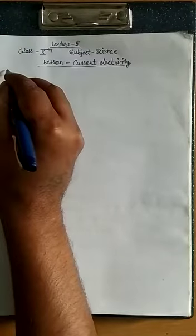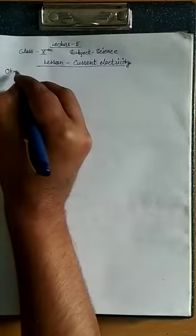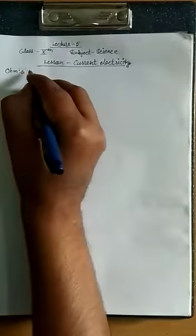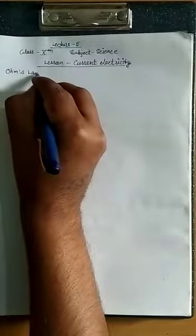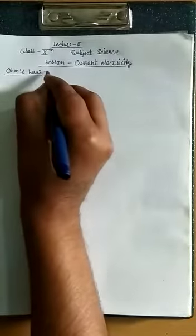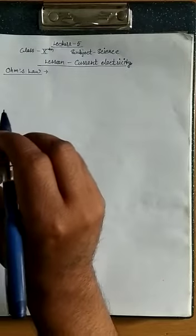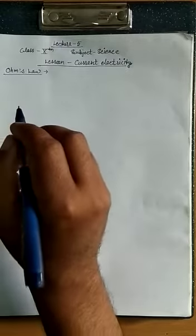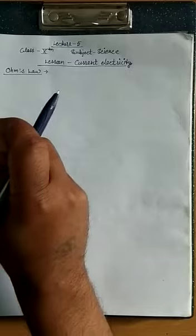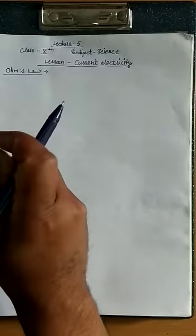Students, today we learn about Ohm's law. This law was given by Ohm. This law relates electric current flowing through a conductor and applied potential difference across the ends of conductor. This is a practical law, an experimental law, and we can explain it with this experiment.